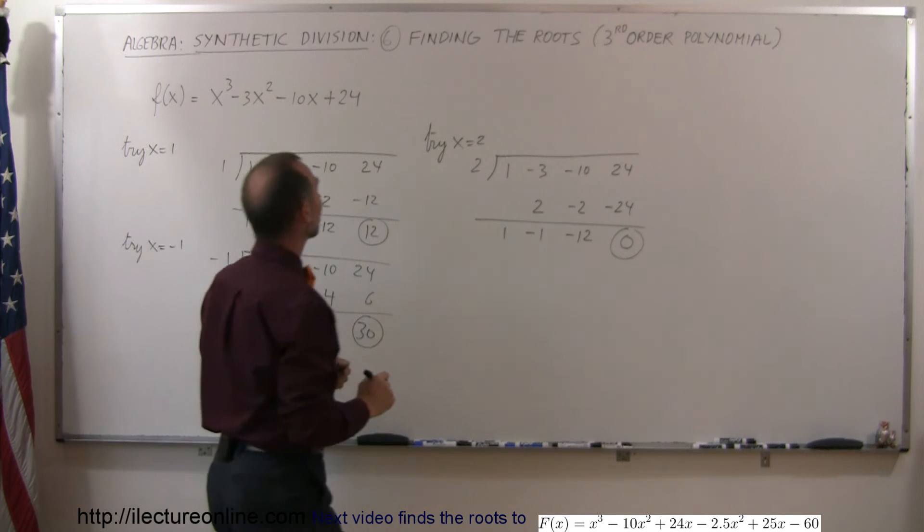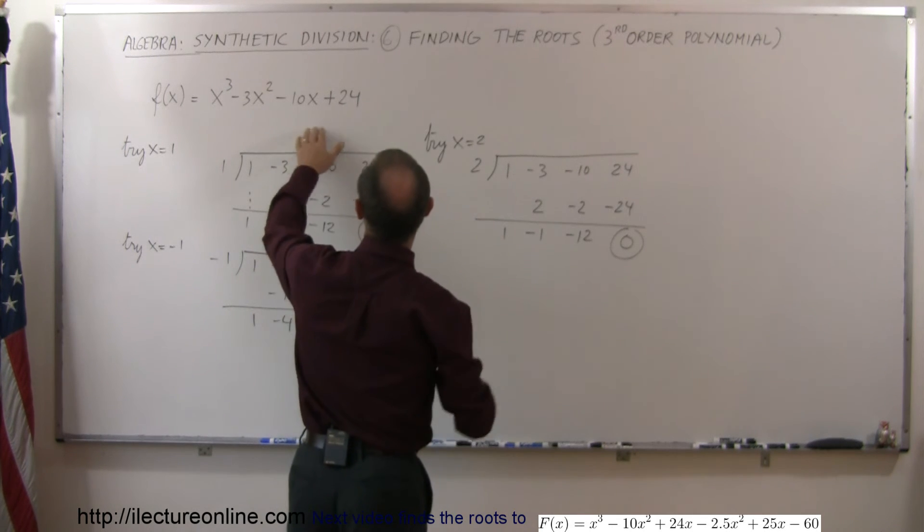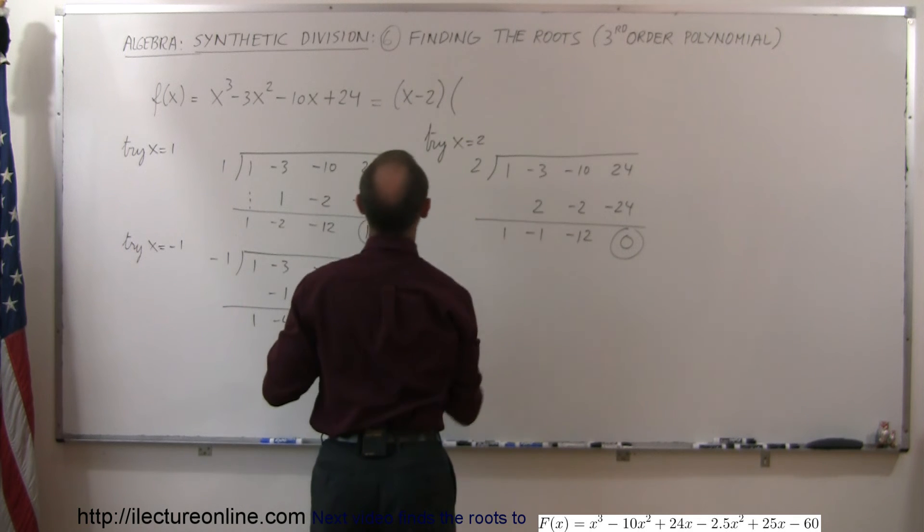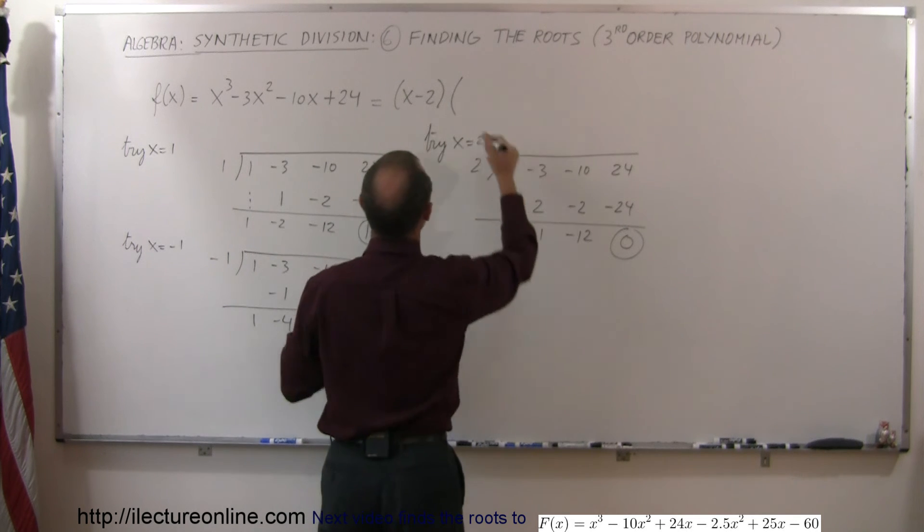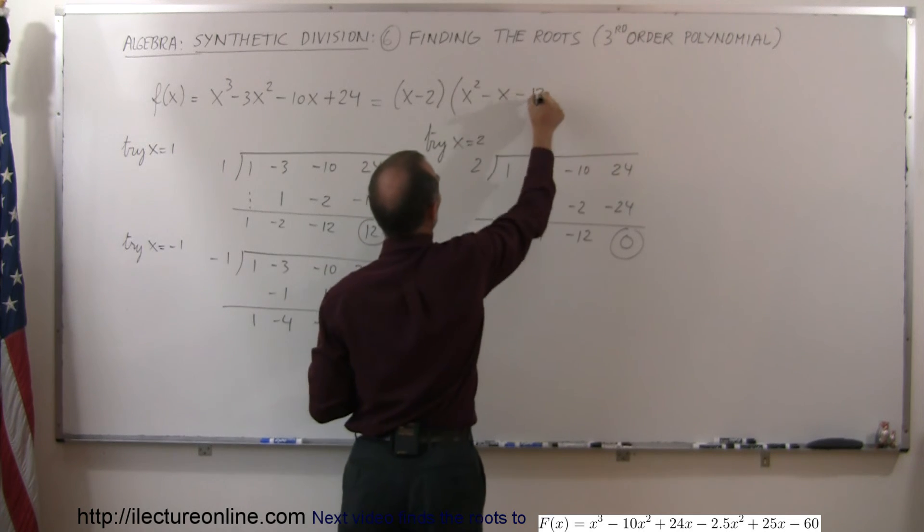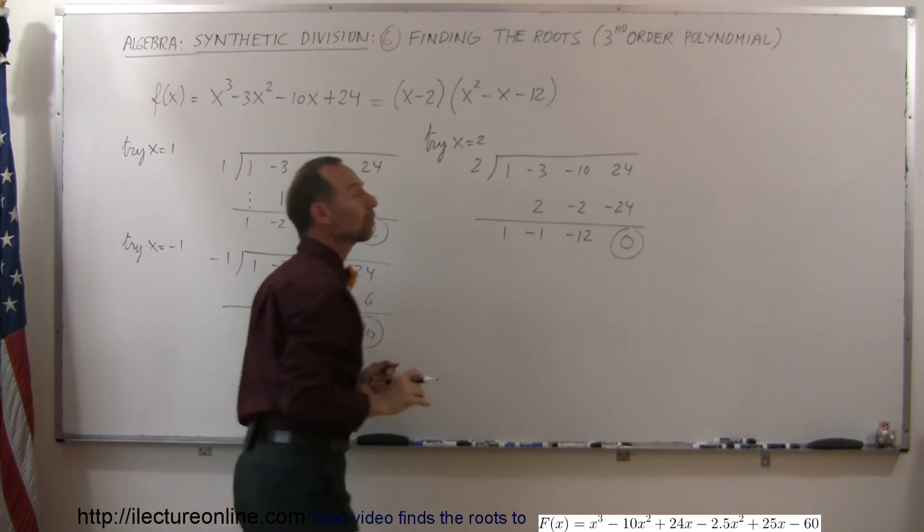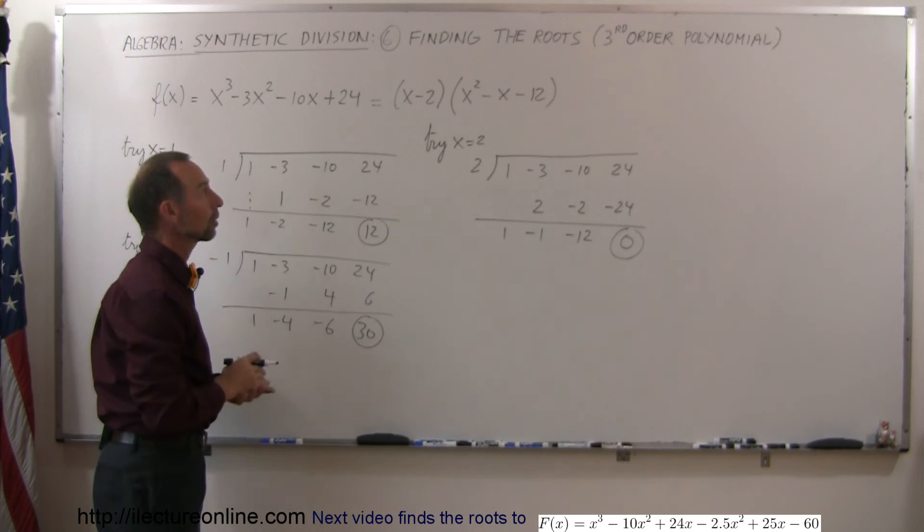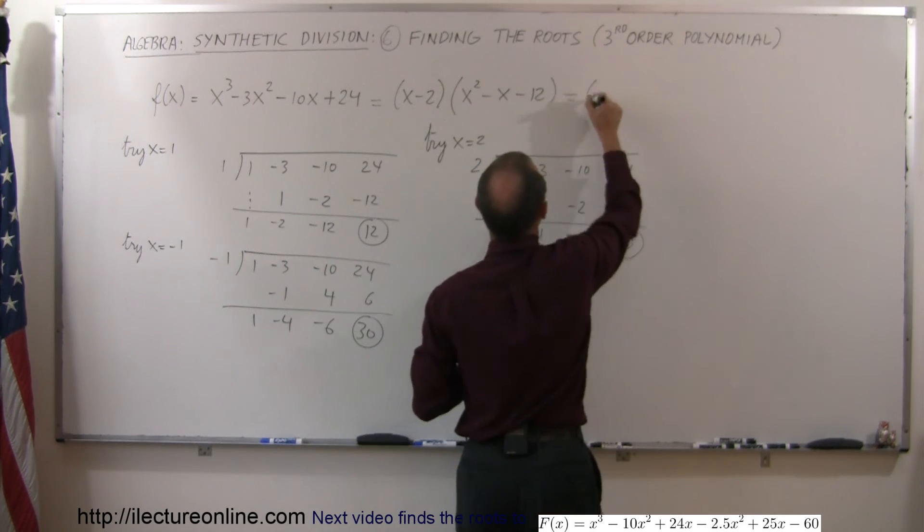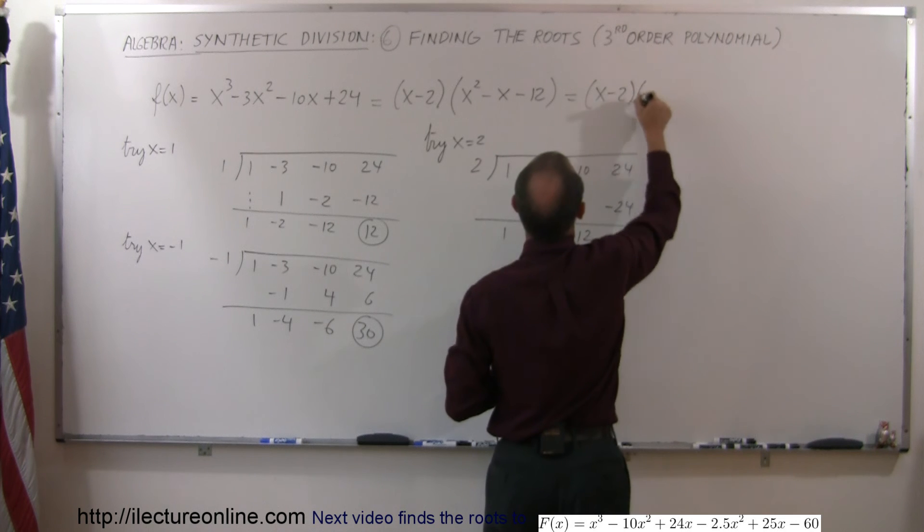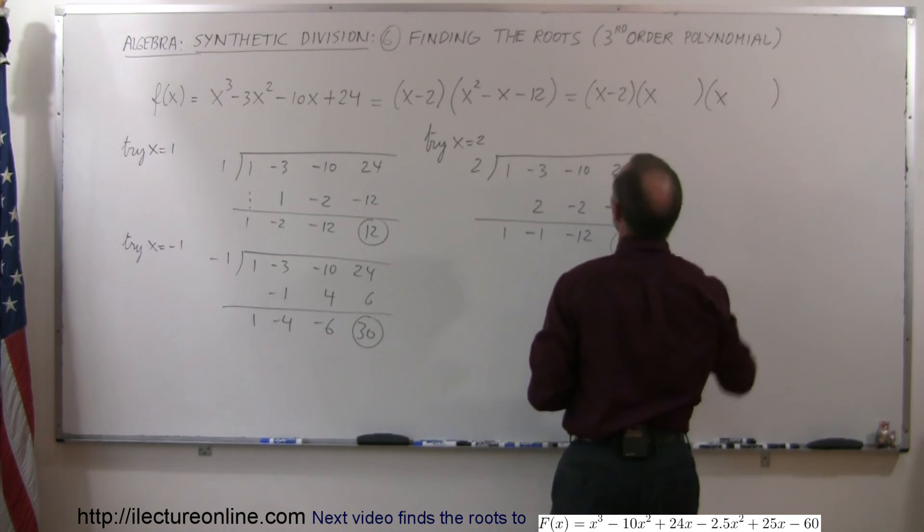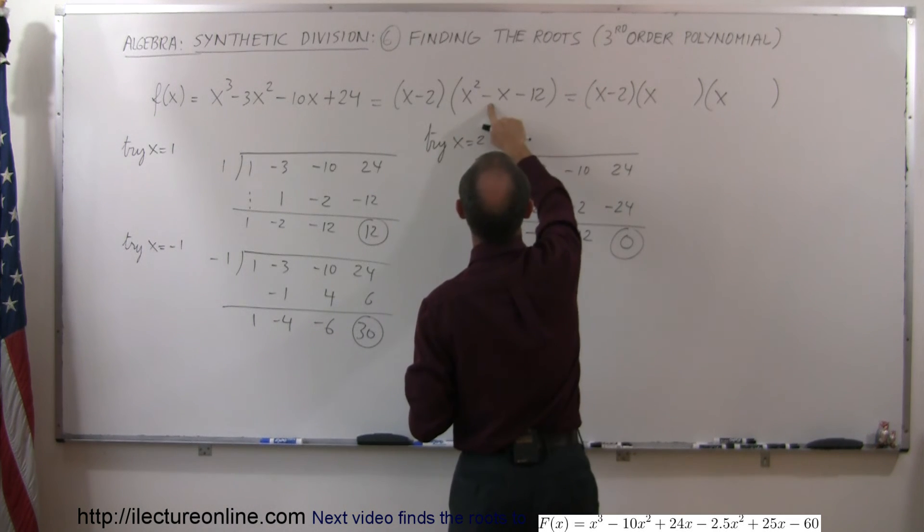So what that means now is that x minus 2, this cannot be written as x minus 2 times, and these are the coefficients of what's remaining. That would be x squared minus x minus 12. And this is easier to find the roots of because it's just a second order polynomial. And so we can say, well, that can be written like this. x minus 2 times, and we can use our old methods.